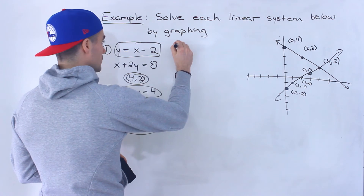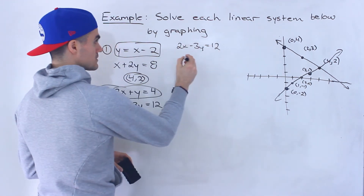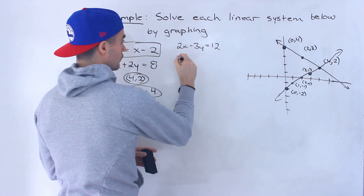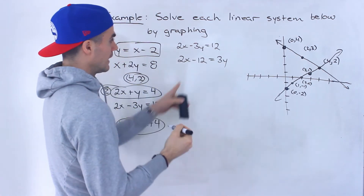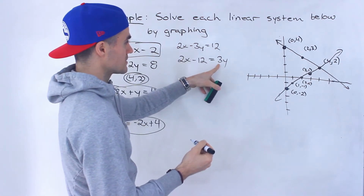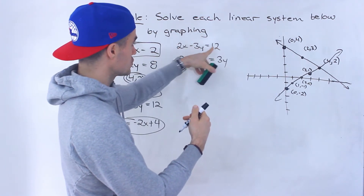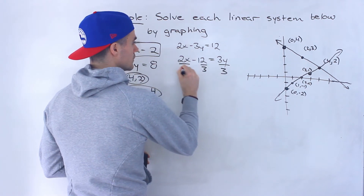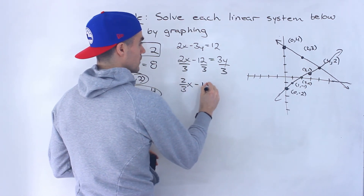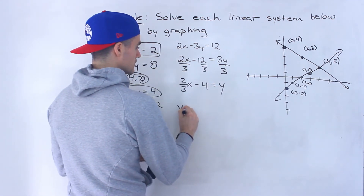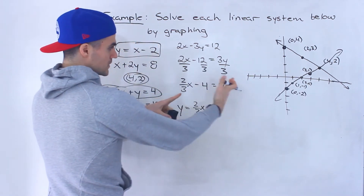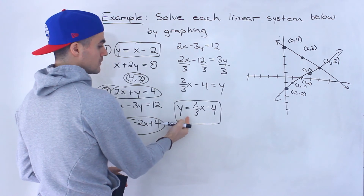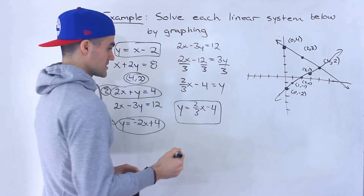This second line is going to be a little more complex to isolate for y, but it's still not too bad. I'm going to bring the negative 3y over to make it positive, then bring the 12 over, so I'll have 2x minus 12 equals 3y. Personally I like to bring the y to the side where it's going to be positive so I don't have to worry about negatives. So I'll have two-thirds x minus four equals y, which we rewrite as y equals two-thirds x minus four. That is this line in y equals mx plus b format.